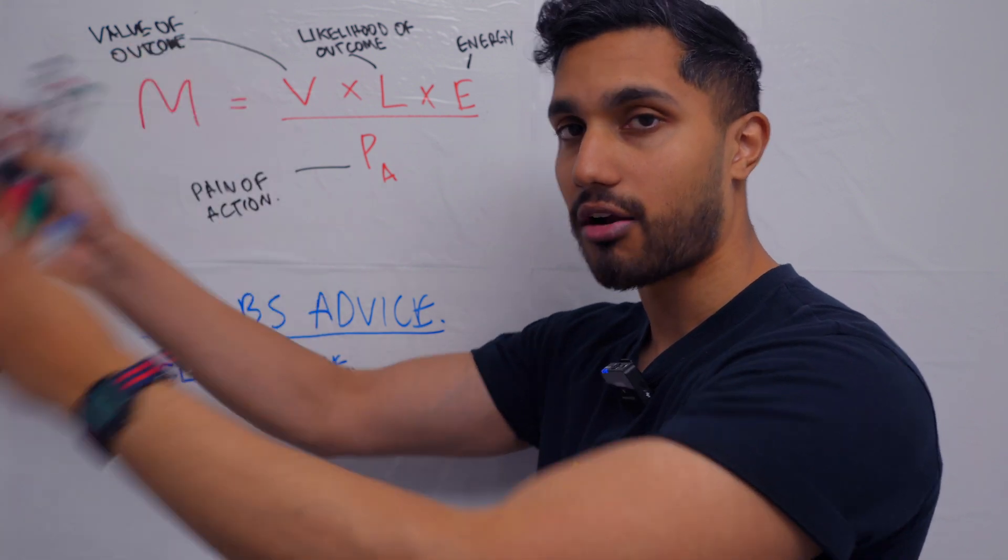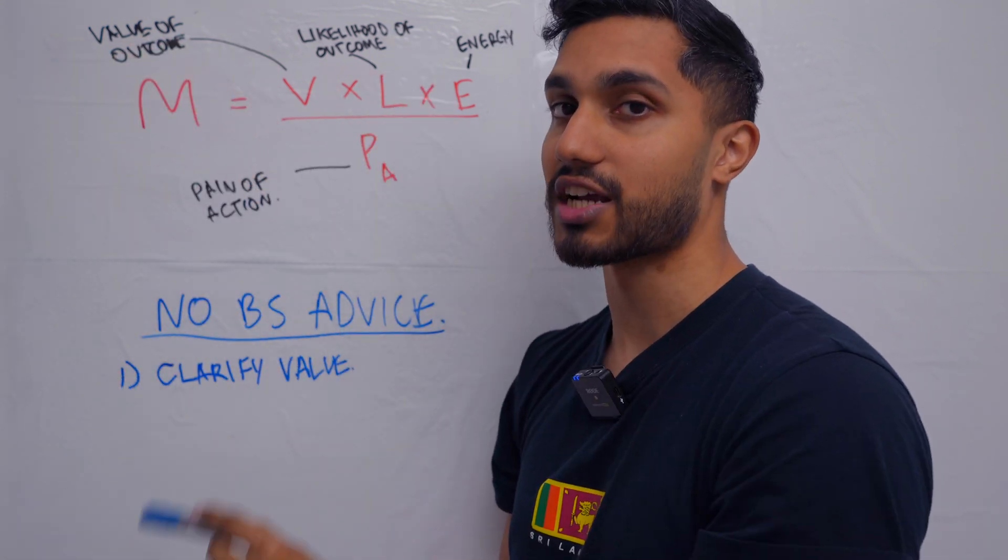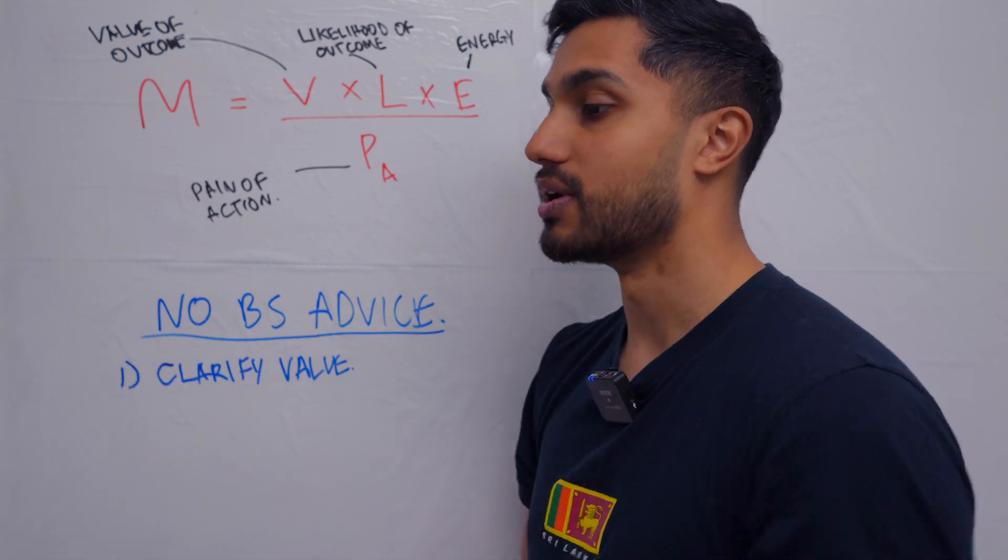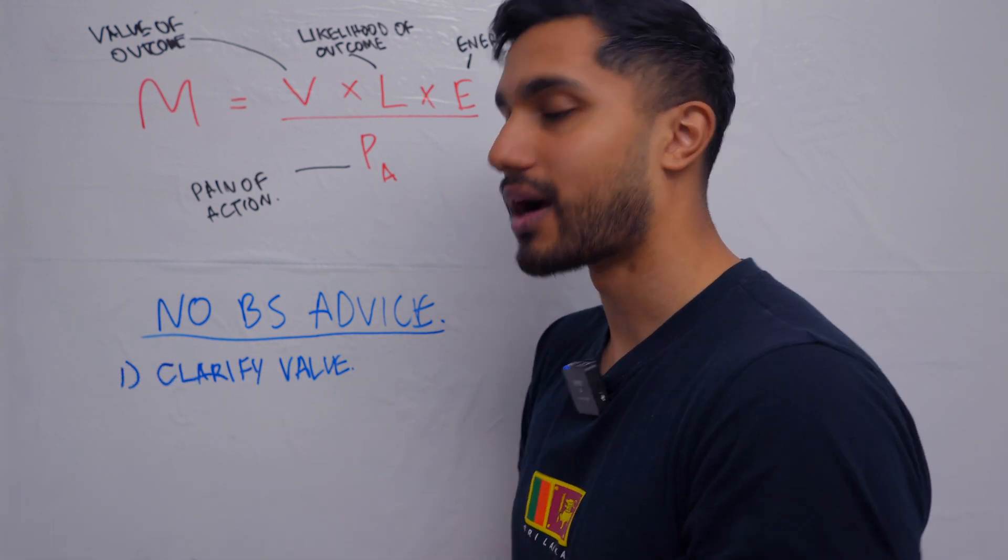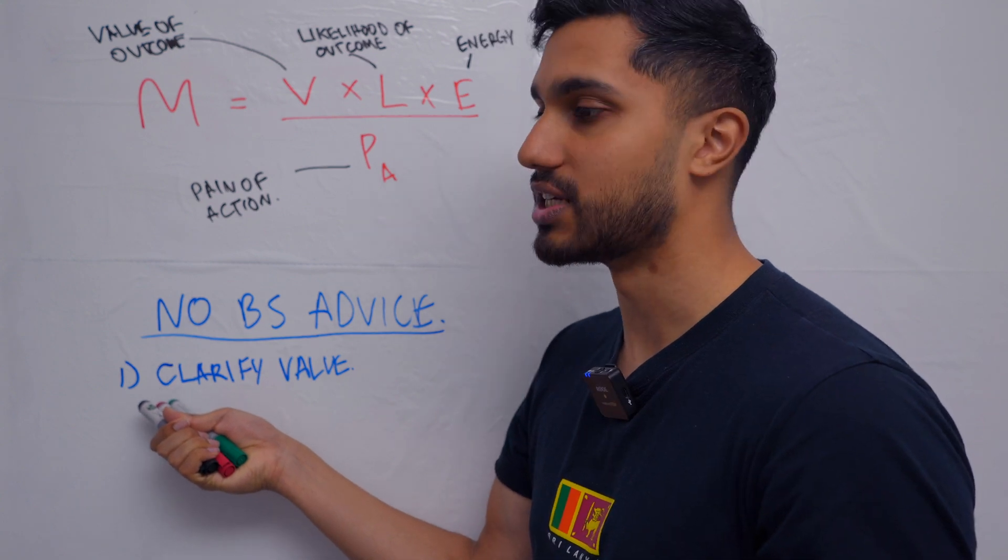If you are not motivated to do an action that you know you should do, write down in your journal why this is so valuable. Play out the parallel universes in your life where you do this action or you don't do this action and what happens. For example, if you want to work out and get the ideal body that you want, you have to clarify the value of the ideal body.